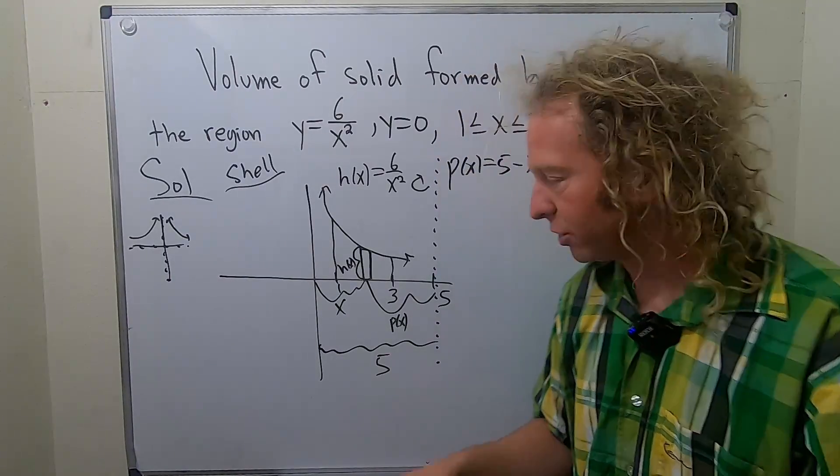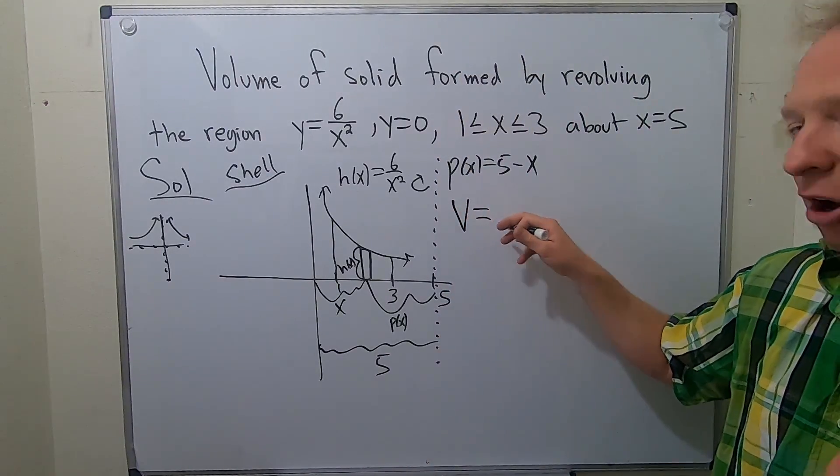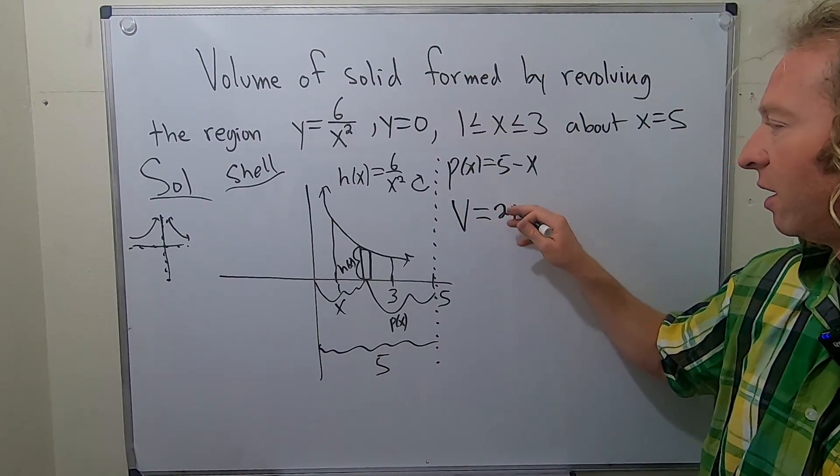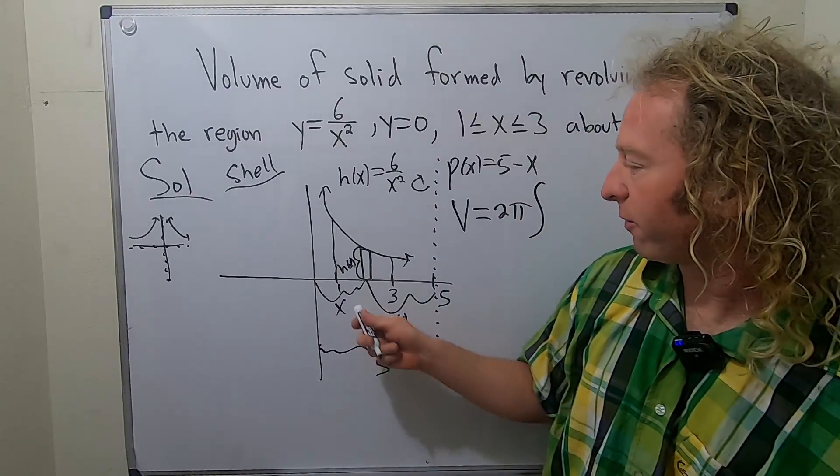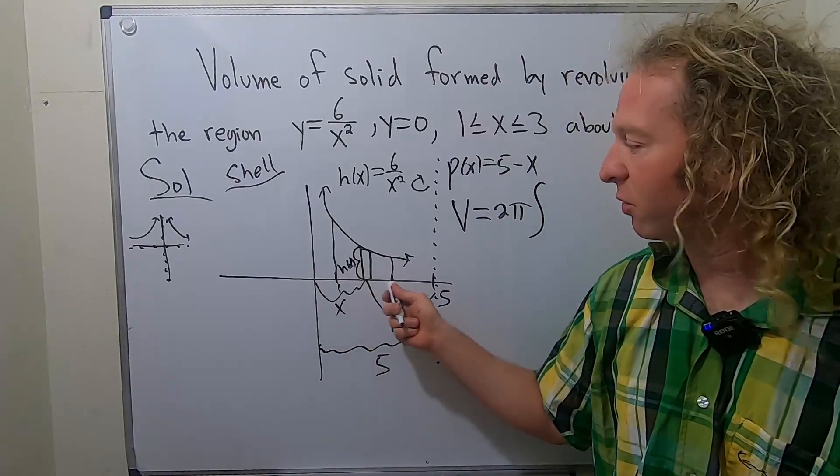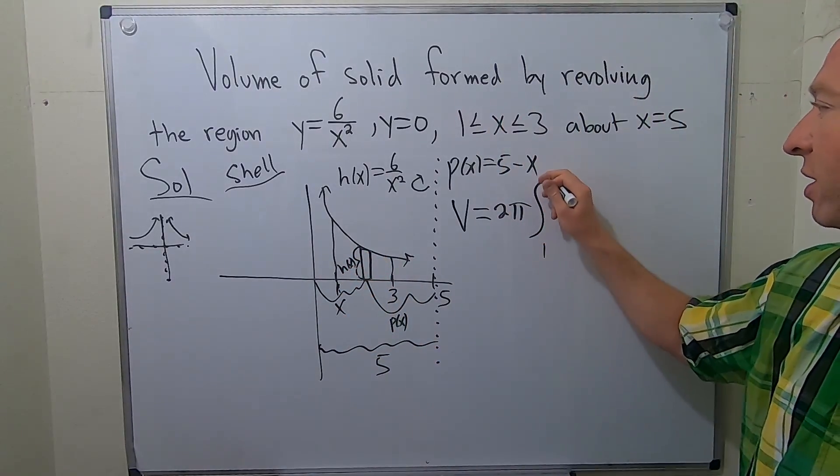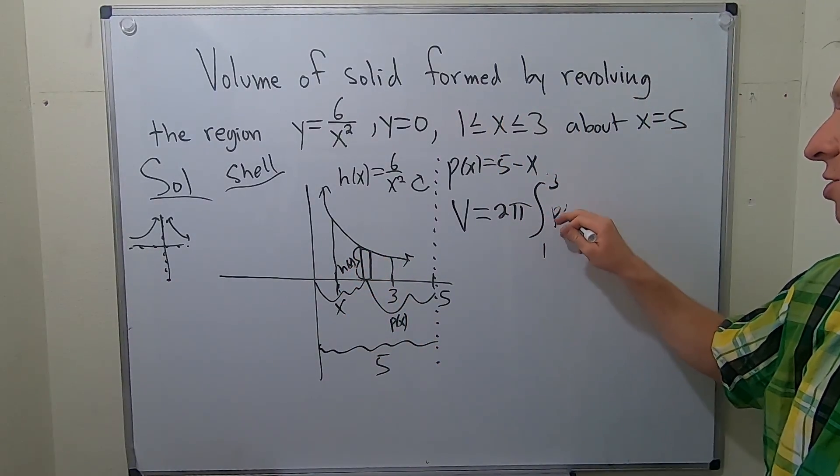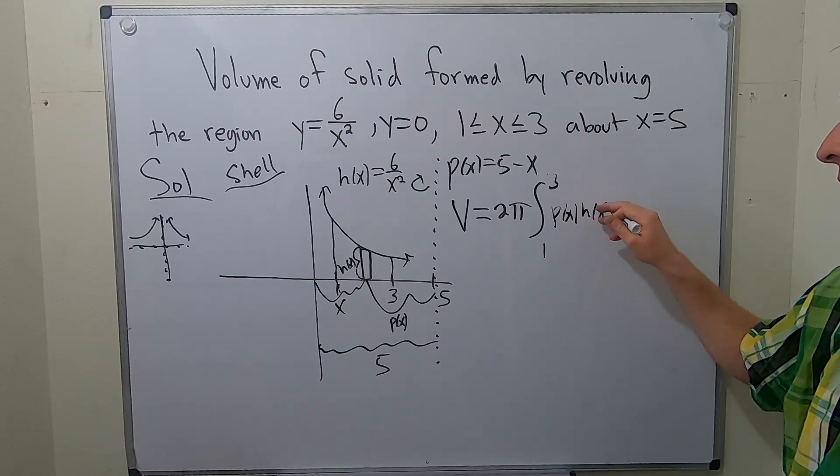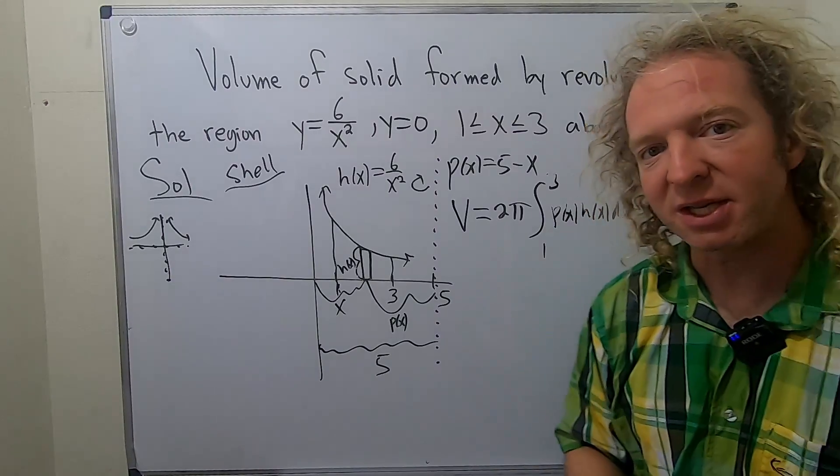So now the formula for the shell method, it always has a two pi. And we're integrating from one to three. Our limits of integration are x values because we have functions of x. So one to three, and the formula is always p h. Okay, it's always p times h.